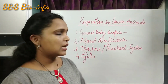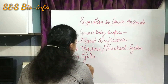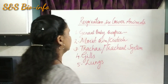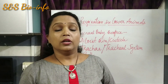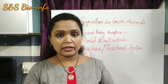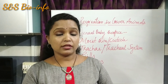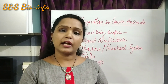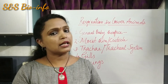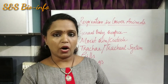The fifth one is lungs. Most land vertebrates such as birds, mammals, and reptiles possess vascularized bag-like structures called lungs as their respiratory organs.